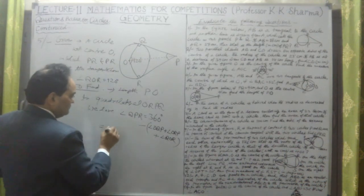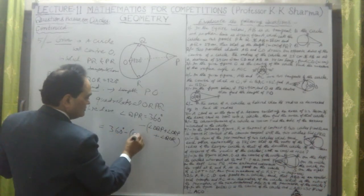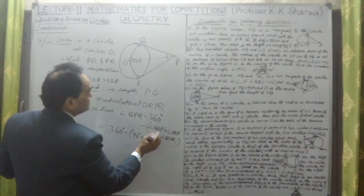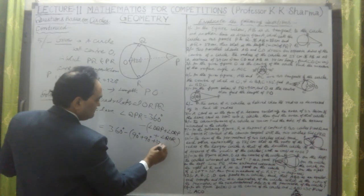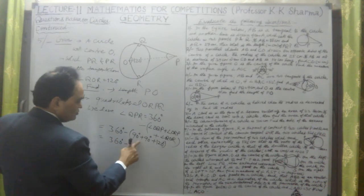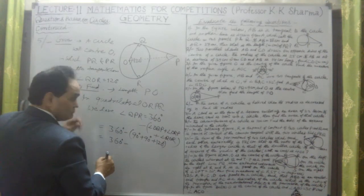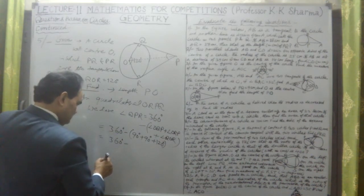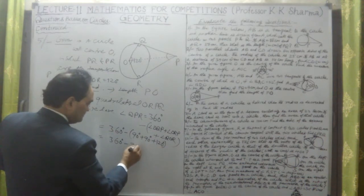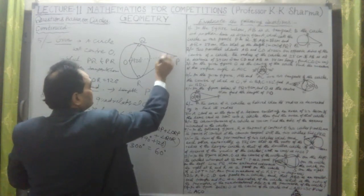Substituting: 360° minus (90 + 90 + 120) = 360° minus 300° = 60°. So angle QPR equals 60 degrees. Since triangles OQP and ORP are congruent — because both tangent lengths are equal and OQ = OR (radii) — each half angle is 30 degrees.